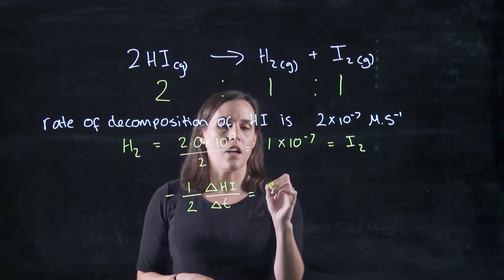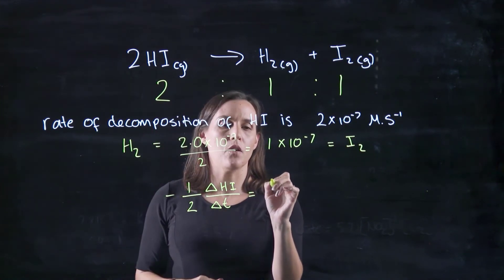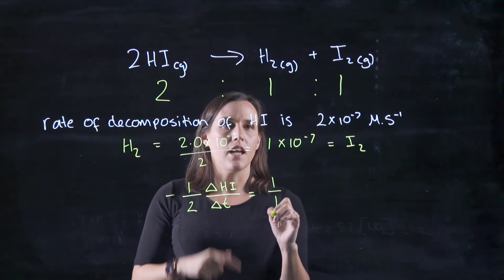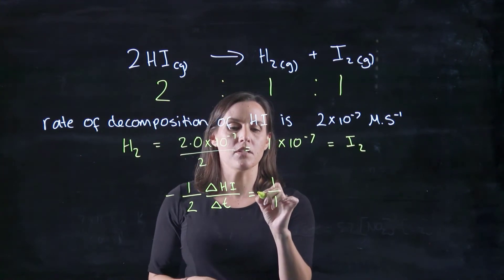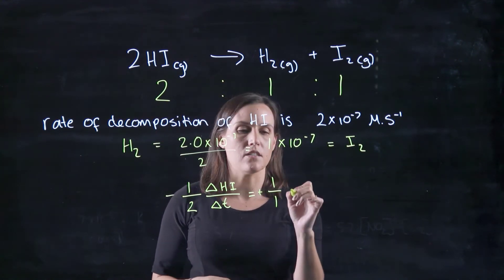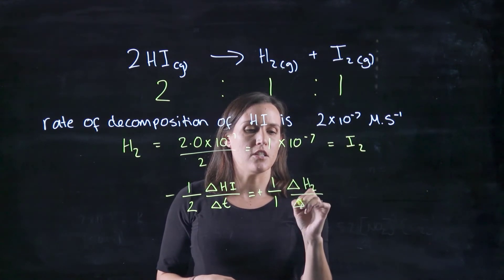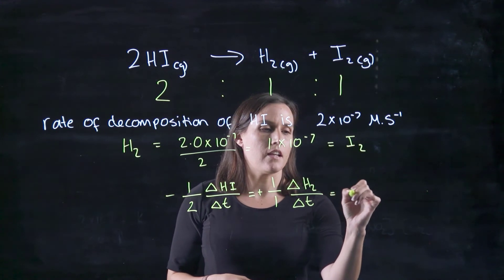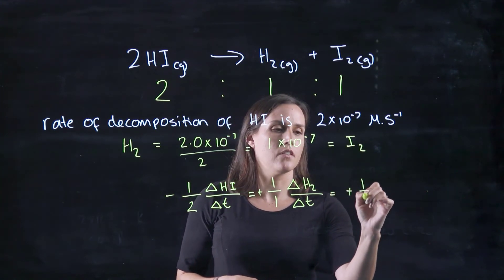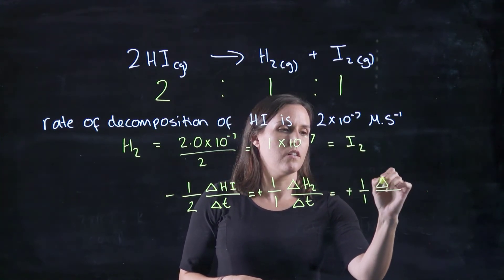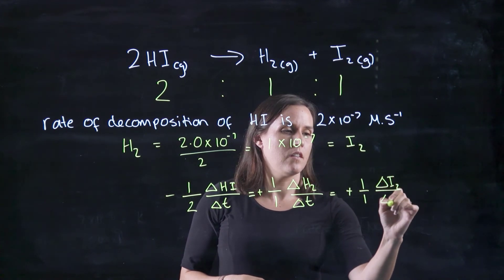And that equals, the coefficient out here would be 1 over 1, and that's appearing, so it would be a positive. It would be delta H2 divided by the change in time, and then I can write it out for I2 over time.